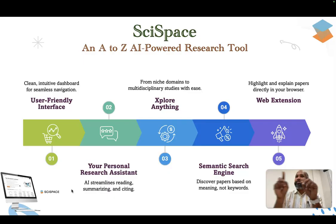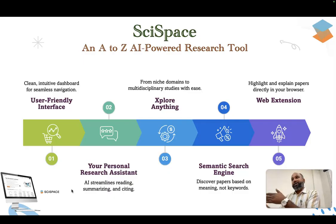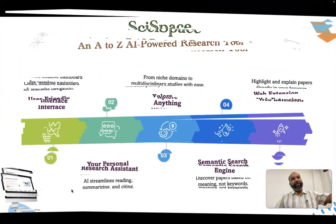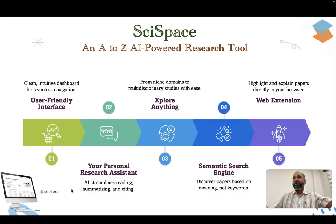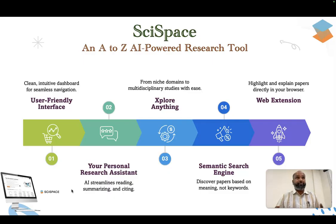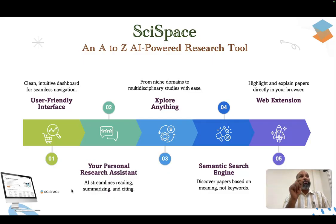In the case of research, we divide the entire research into three stages: pre-data analysis, data analysis, and post-data analysis. During the data analysis stage, we need to use software like SPSS or similar tools. But we also need to work during the pre-data analysis phase, which involves review of literature and finding the research purpose. At the post-data analysis stage, we do report writing. For these two purposes — pre and post — this tool is wonderful. That's the reason I'm introducing SciSpace as an A-to-Z power research tool.